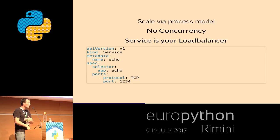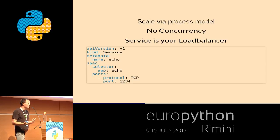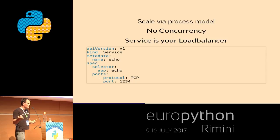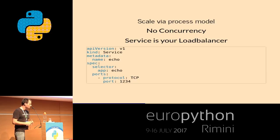The example script had no concurrency, and while it was a simple example, this is generally true. You can keep your internal code really simple because the idea is to scale via the process model — that's the 12-factor apps methodology. You scale horizontally by creating more instances of your application. We already did that — we just create more replicas and they handle the traffic, which means internally we can have really easy debugging because our control flow gets really simple. Your Kubernetes service is your load balancer.